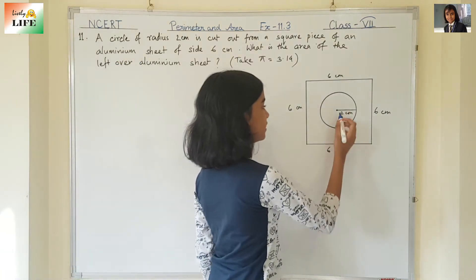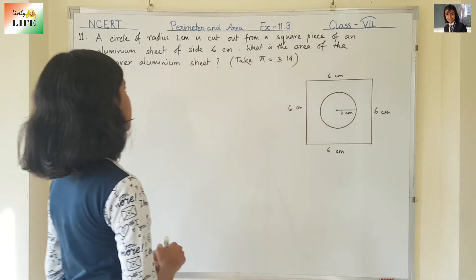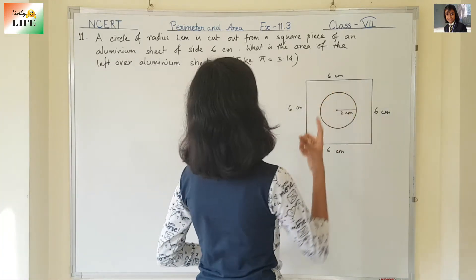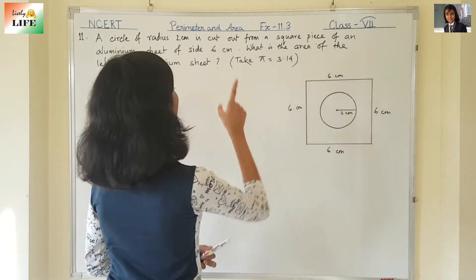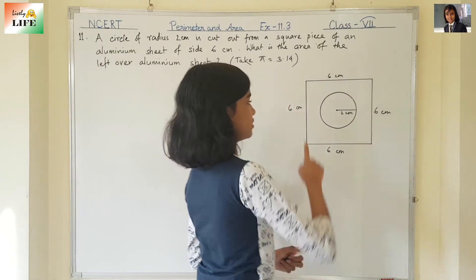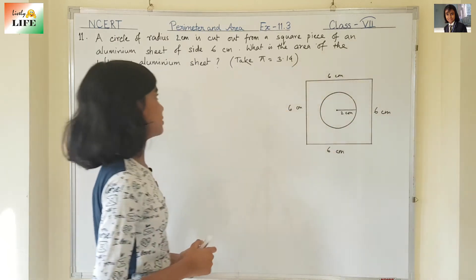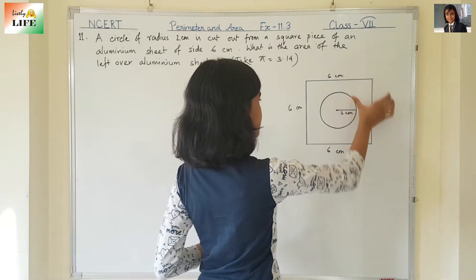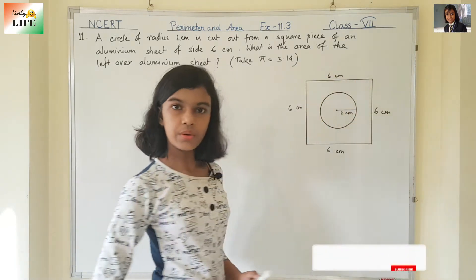You can see this is a circle of radius 2 cm and it is cut out. This portion is cut out from a square piece of an aluminium sheet of side 6 cm. All the sides are 6 cm. What is the area of the left over aluminium sheet? It means this area. We need to find out.